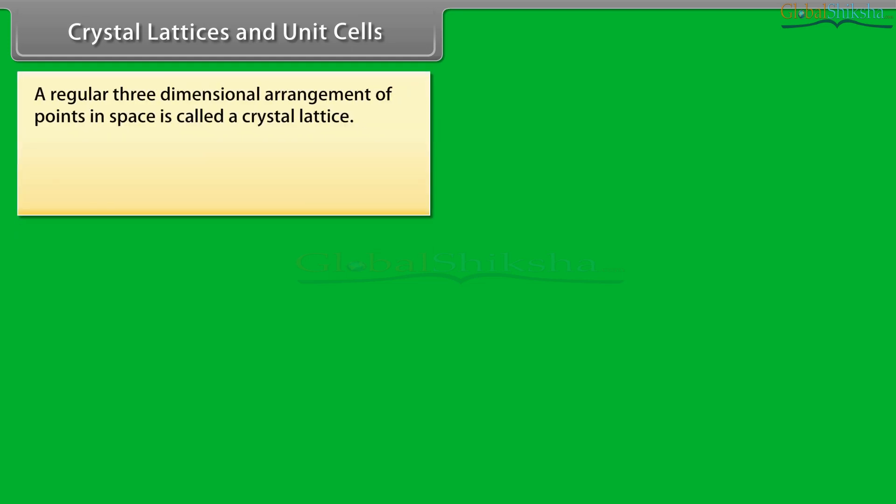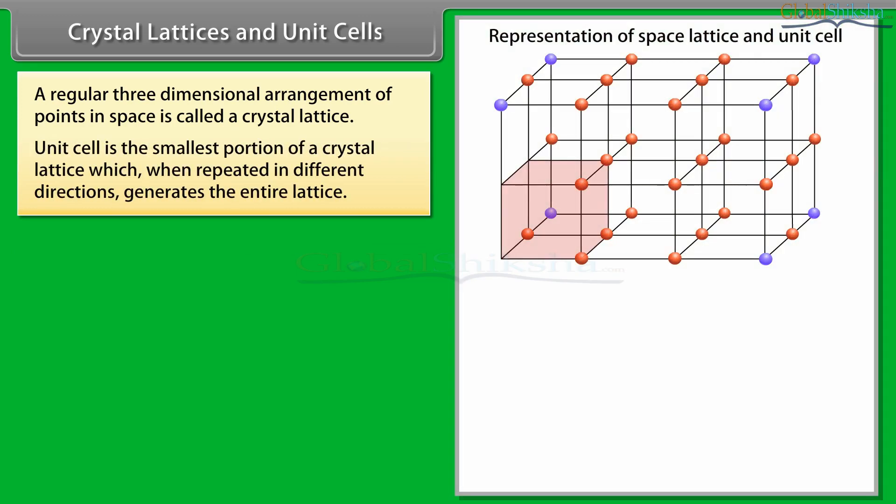A regular three-dimensional arrangement of points in space is called a crystal lattice. A unit cell is the smallest portion of a crystal lattice which, when repeated in different directions, generates the entire lattice.